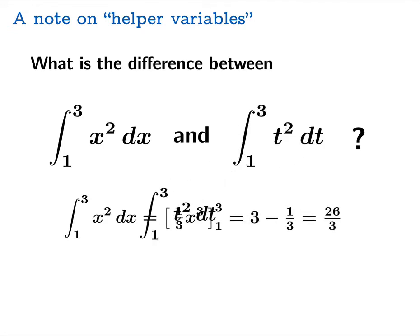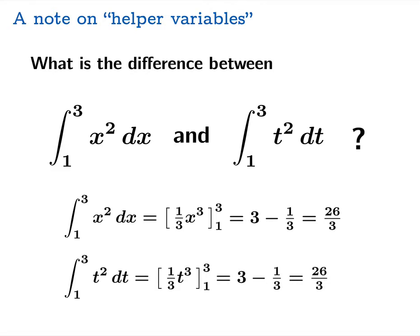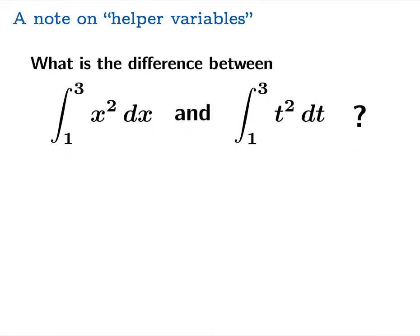And of course we could evaluate the right-hand integral using the same method: find the antiderivative 1/3 t cubed, substitute 3 and 1, and we get 26/3. Once again, perhaps more relevant than noticing you get the same number is that these are both notations telling you about a process, and that process — even before you get the answer — is the same, no matter what your variable name, x or t. So you can think of this integral as something that perhaps doesn't deserve a variable at all. It's the same story as our summation question: the variable name is irrelevant.